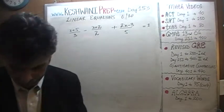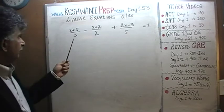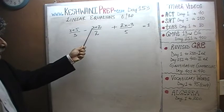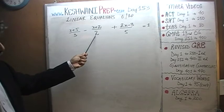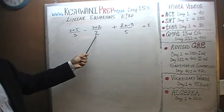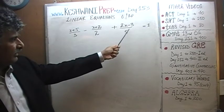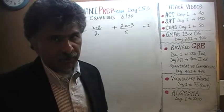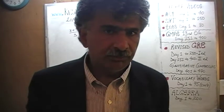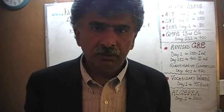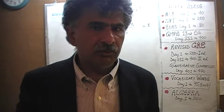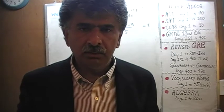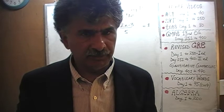One more time: we are told that x plus 5 over 3, minus x plus 2 over 2, plus 2x minus 3 over 5, equals 1. What I want you to do right now is to pause the video, solve the problem yourself, and once you have the answer, resume the video and compare your work against the work that you and I will do together.